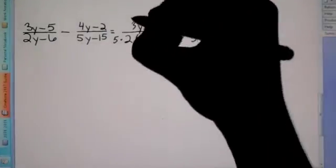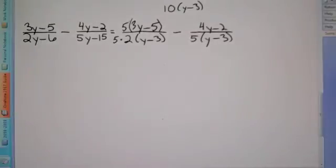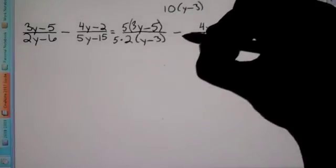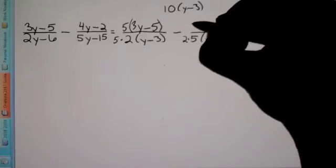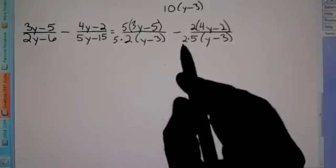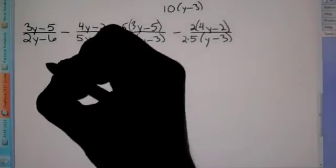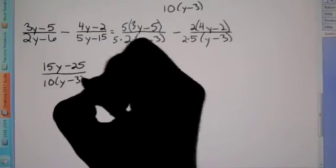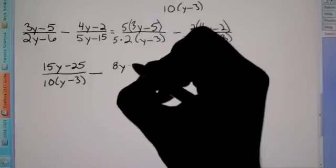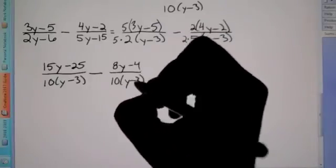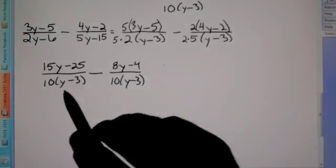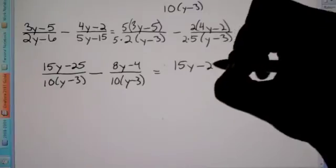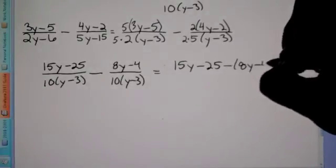This side is missing the 5, so we put this in parentheses and multiply by 5 — top and bottom — to get 10 times y minus 3. Same thing on the other side: multiply by 2 — top and bottom. Whatever you multiply on bottom, you have to multiply on top. So on top we have 15y minus 25 over 10 times y minus 3, minus 8y minus 4 over 10 times y minus 3. Now we can combine the numerators since we have the same denominator. But if there's a minus sign, put the second side in parentheses because we distribute that negative.